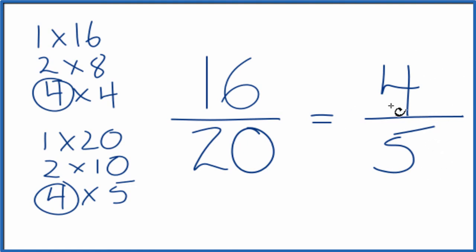And we can't simplify this any further. If you divide 16 by 20 and 4 by 5, you'll get the same answer, 0.8. These are equivalent fractions. It's just we've reduced 16 over 20 down to its lowest terms, 4 over 5.